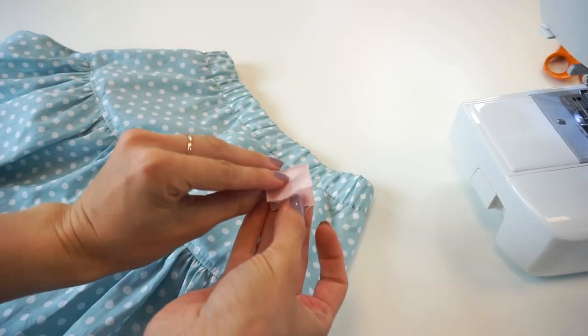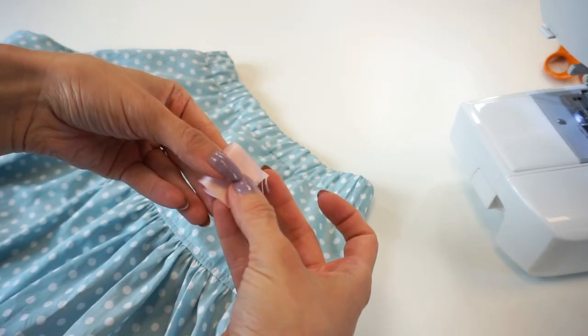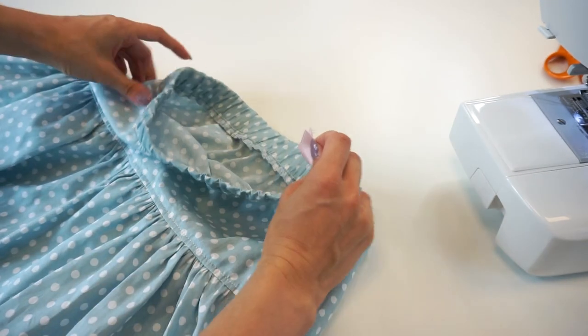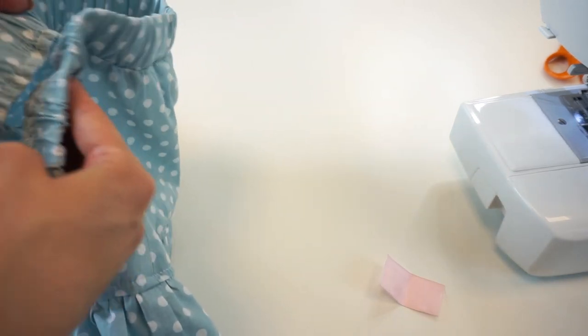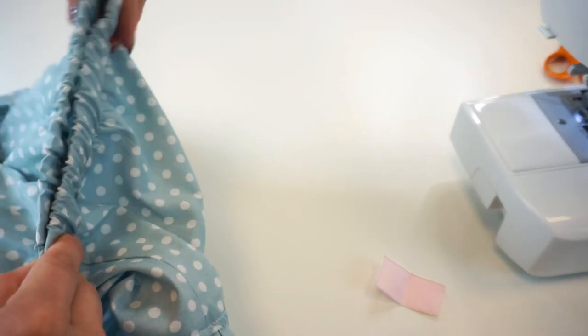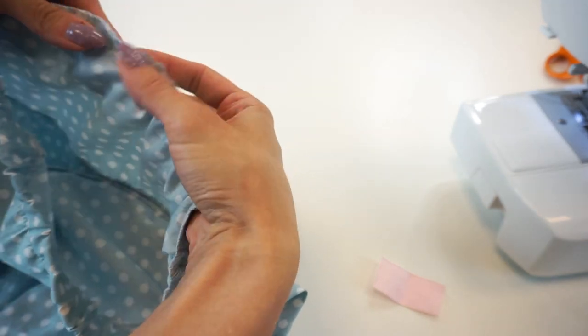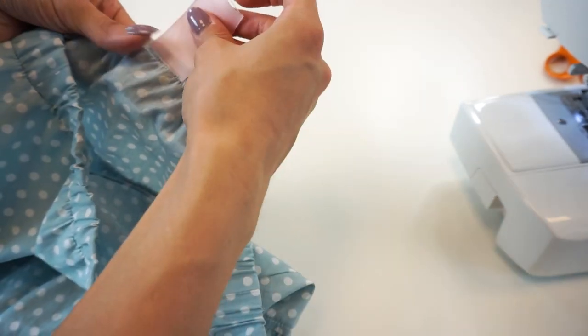There is one small optional step I will do. Since the front and back panels of the skirt aren't exactly the same, I will use a pink ribbon to mark where the back part of the skirt is. This way I will not end up wearing the skirt backwards.